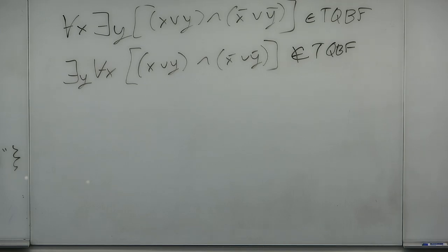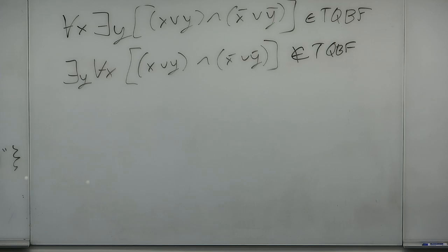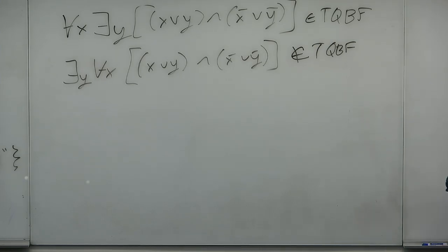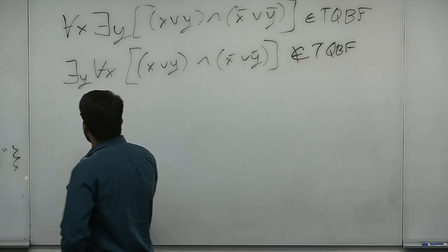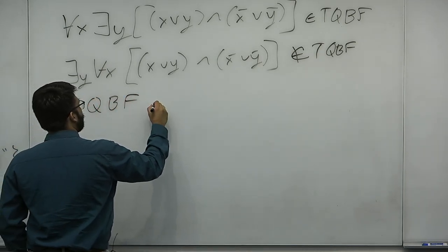Any questions on TQBF, its syntax and form? If all quantifiers are existential, you just have a SAT formula — that's a sub-problem. But how do we know TQBF itself is not NP-complete? We don't have a proof that TQBF is not NP-complete, because that would prove NP does not equal PSPACE, which is an open problem. We want to prove TQBF is PSPACE-complete.